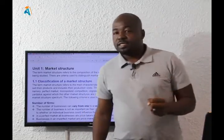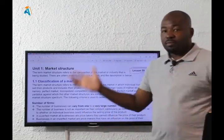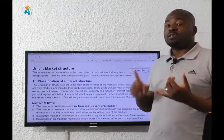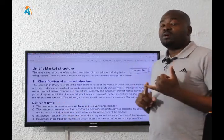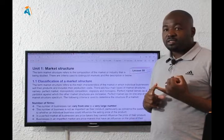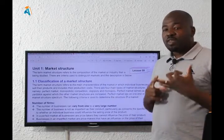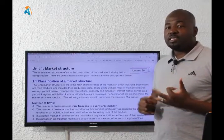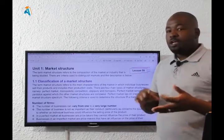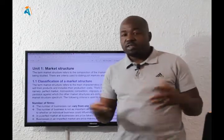Let's get started. Microeconomics has three main topics: perfect markets, or dynamics of perfect markets, dynamics of imperfect markets, and market failure. We're starting with dynamics of perfect markets.